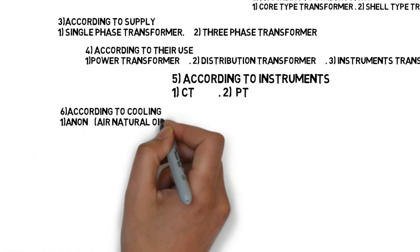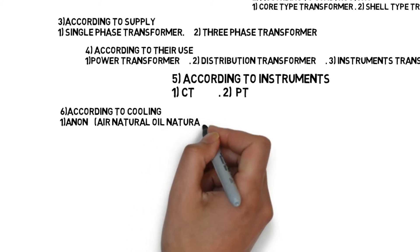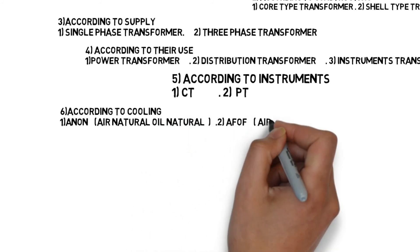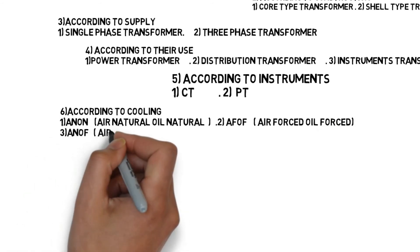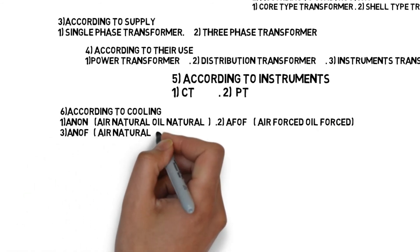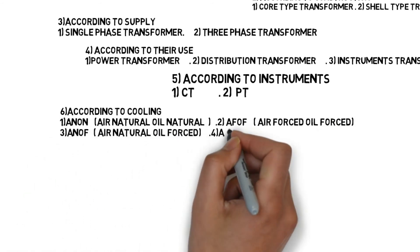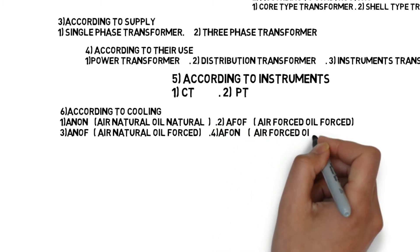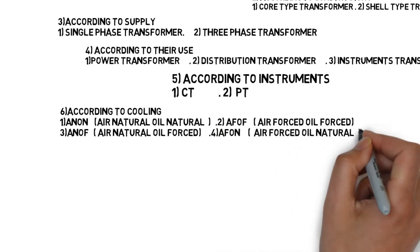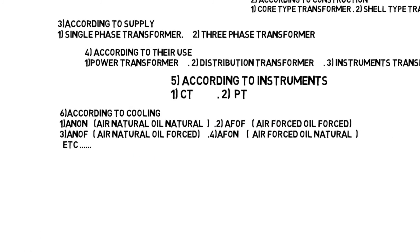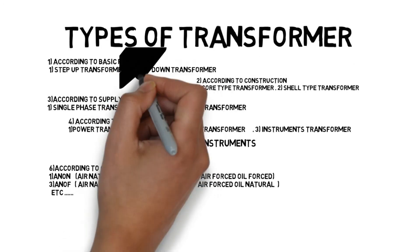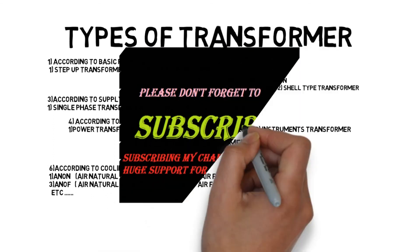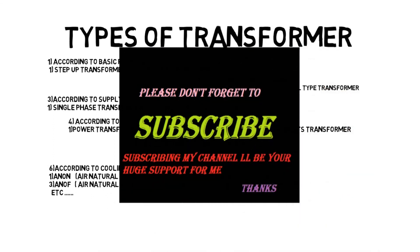The last type of transformer is classified according to cooling. According to cooling, we have a lot of types of transformer: ONAN, OFOF, ONOF, and OFWF. Similarly, we have many more types of transformers based on cooling methods.